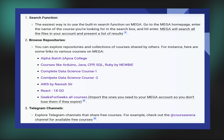You need to go to the MEGA homepage. Enter the name of the course you're looking for in the search bar and hit enter. MEGA will search all the files in your account and present a list of results.